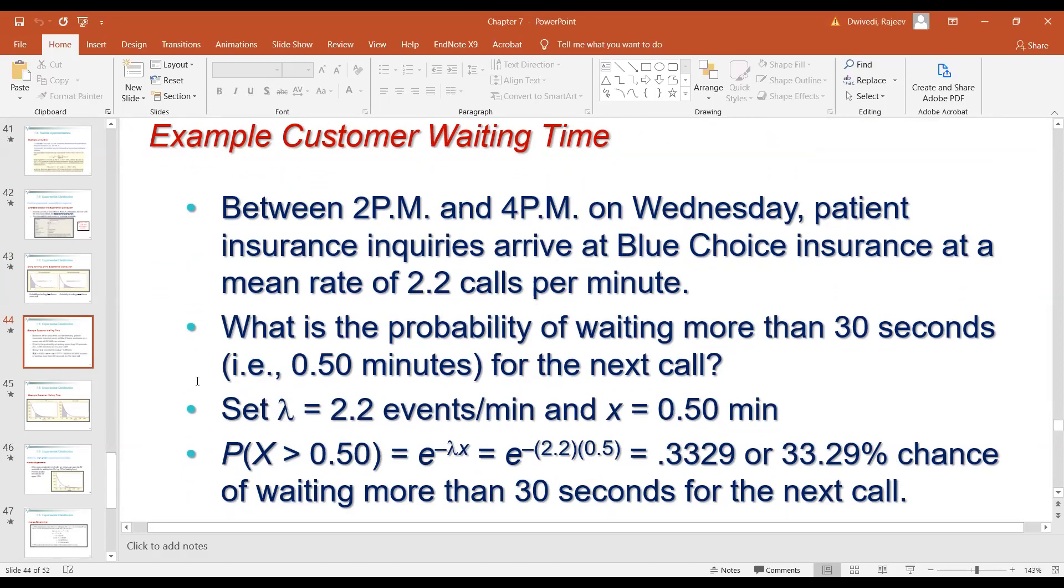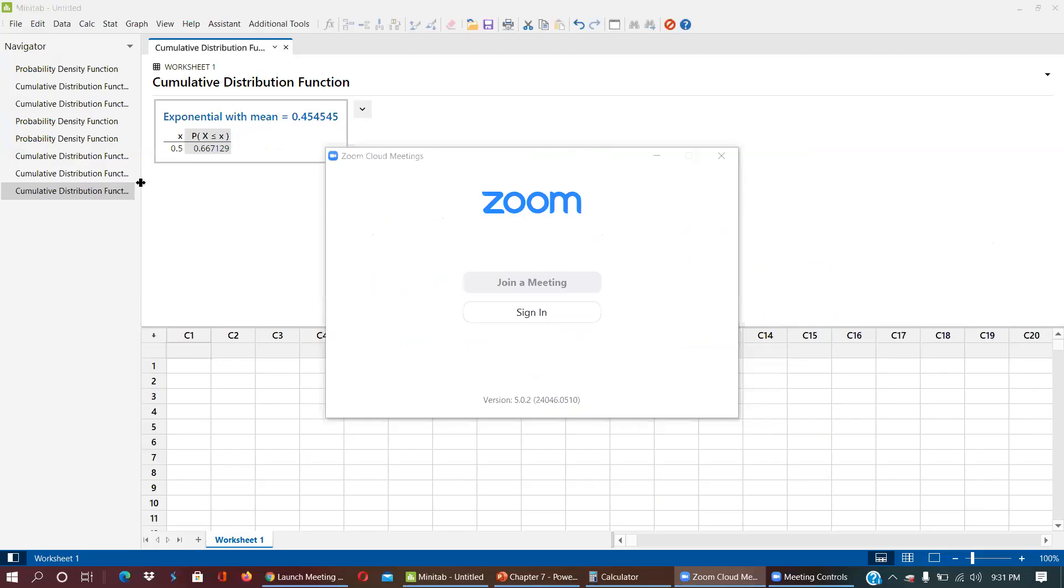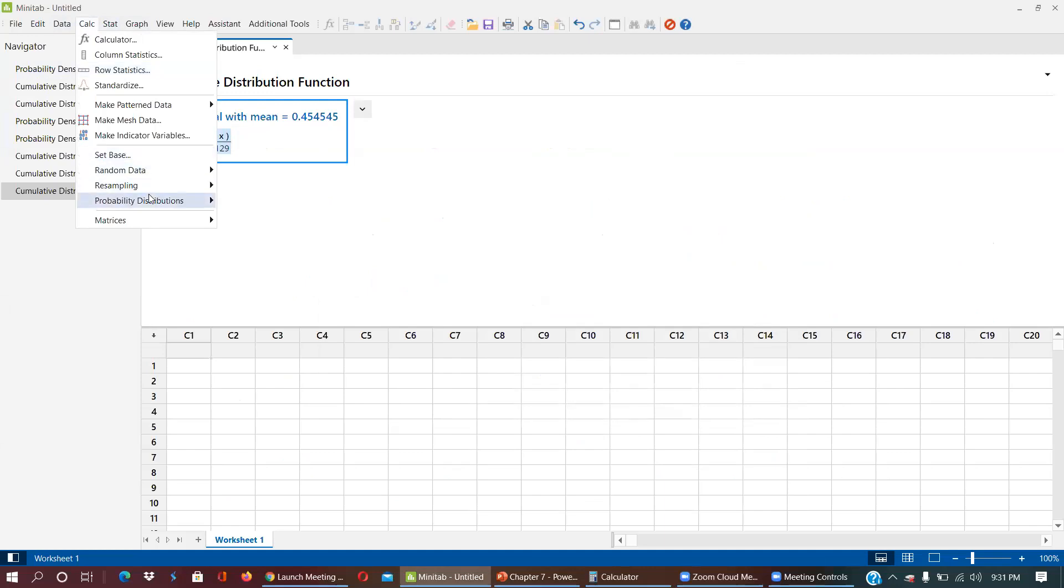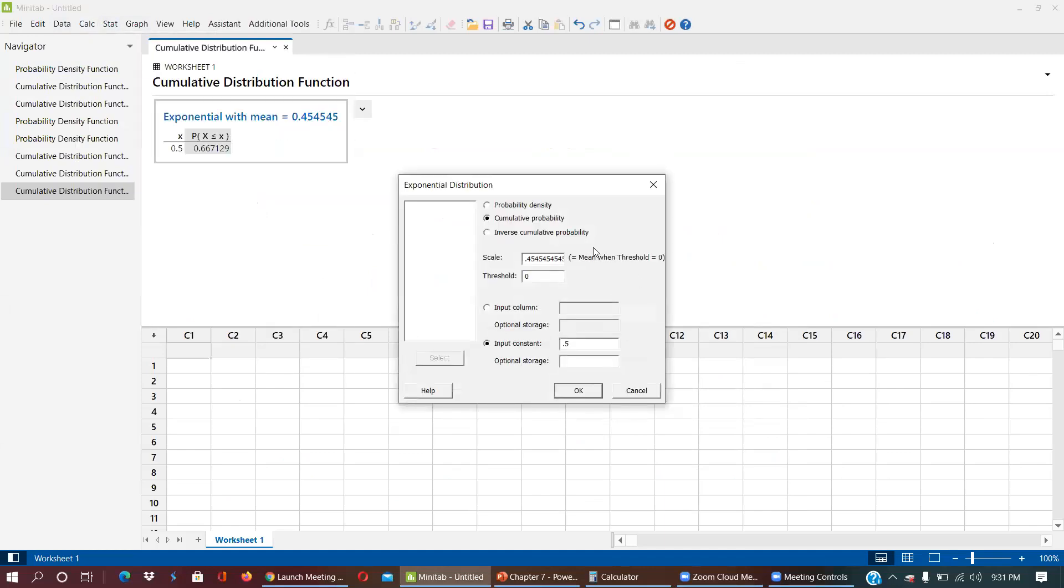This is the value we need to put, again 50 minutes. And now I'm just going to... let me share the Minitab. If I go under calculate probability distribution and we have exponential distribution. This is a cumulative because it is asking more than less than.